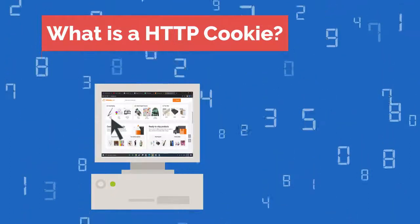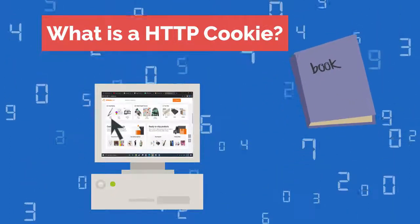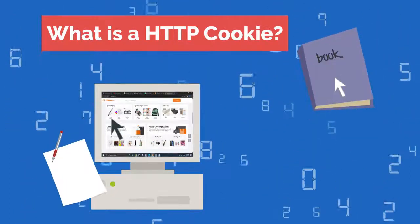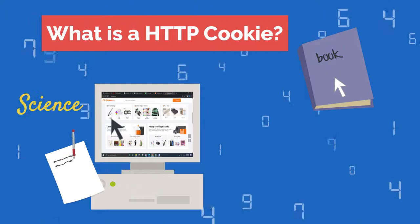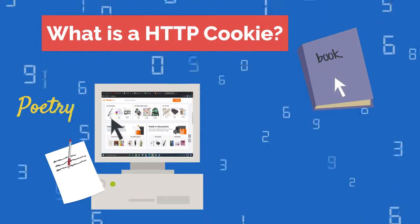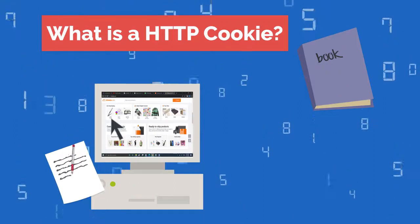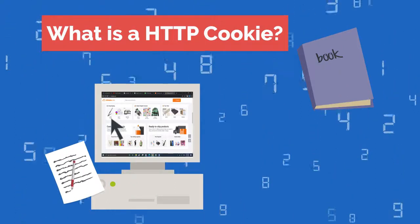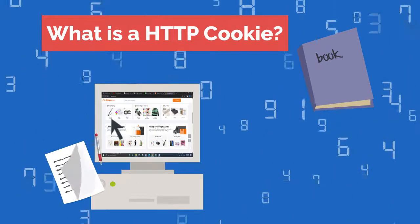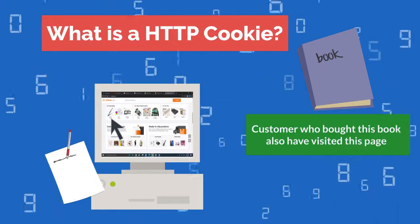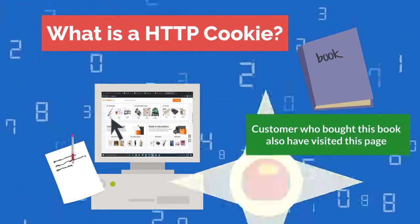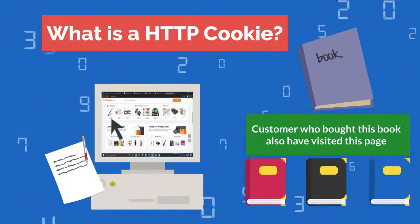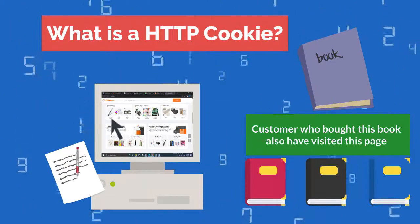For example, if a user buys a book online, the cookies remember the type of book chosen by the user, and the web page will then show a message such as: 'Customers who bought this book also bought' or 'have visited these book pages also.'